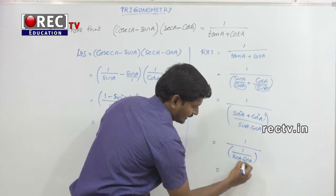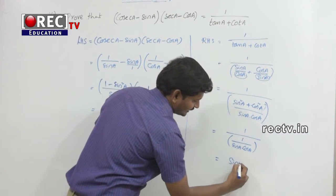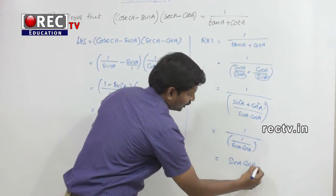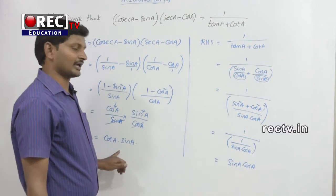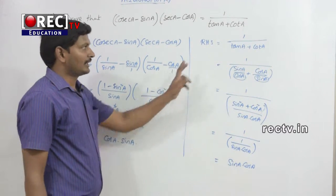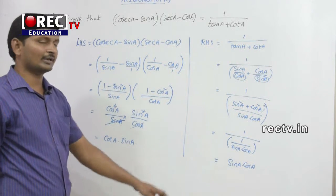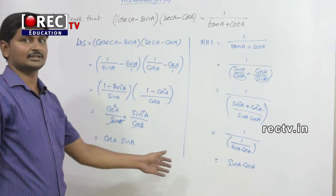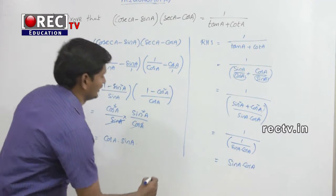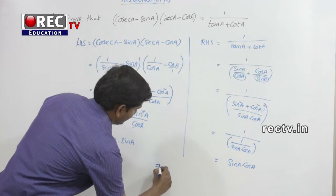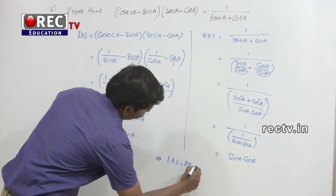So the RHS simplifies to 1 divided by sin(a) into cos(a), which brings sin(a) into cos(a) to the numerator. That is equal to sin(a) into cos(a). We observe that LHS equals sin(a) into cos(a) and RHS equals sin(a) into cos(a). Therefore LHS is equal to RHS. Hence proved.